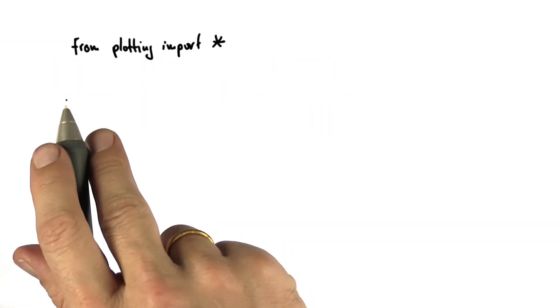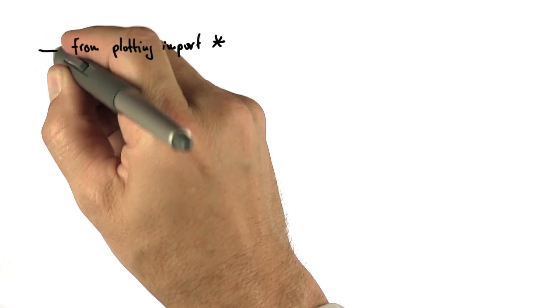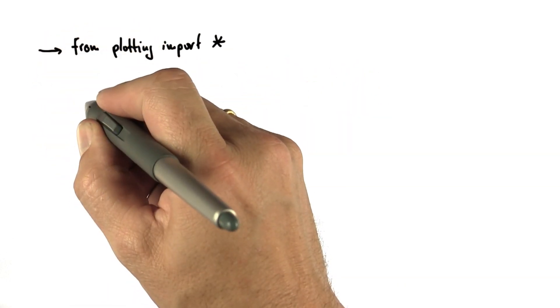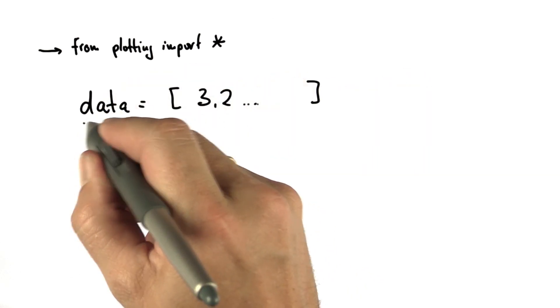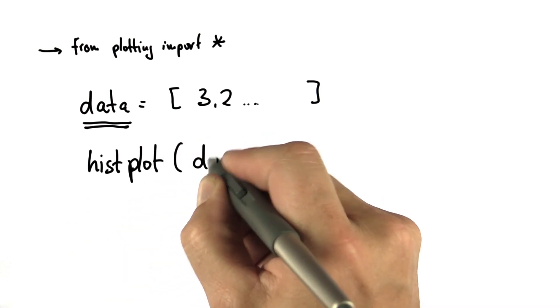So here are the three things we have to tell the computer. If we ignore the cryptic 'from plotting import star', we define the data, list it, give it a name called data, and generate a histogram plot of the data.